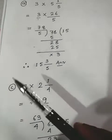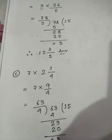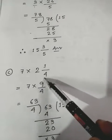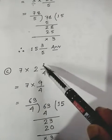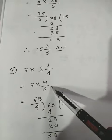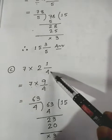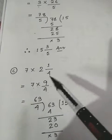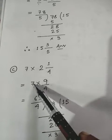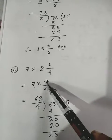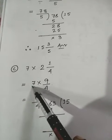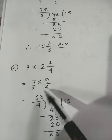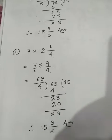Sum number (c) is 7 into 2 1/4. Again this term is in mixed fraction form, so convert it to improper form: 4 × 2 = 8, 8 + 1 = 9, so it becomes 9/4. Simply multiply: 7 × 9 = 63, and below 7 there is 1, so denominator is 1 × 4 = 4.